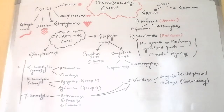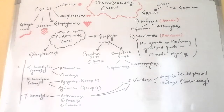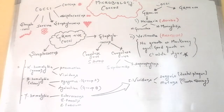Group B streptococcus usually lives harmlessly inside the digestive system and the vagina as normal flora. However, strep B can sometimes cause urinary tract infections, bone infections, blood infections, and pneumonia — particularly in vulnerable people such as the elderly and those with diabetes.